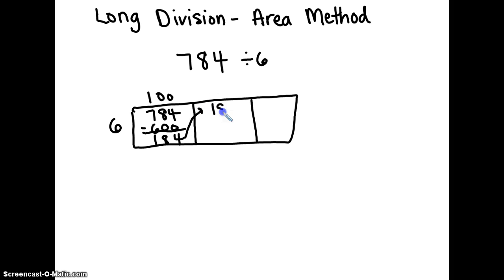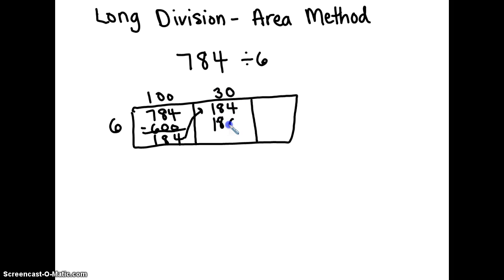Now put one hundred eighty four in the tens place. Six can't go into one, so you check how many times six goes into eighteen — three times. Six times three equals eighteen, plus the zero equals one hundred eighty. Subtract one hundred eighty four minus one hundred eighty, and that equals four.